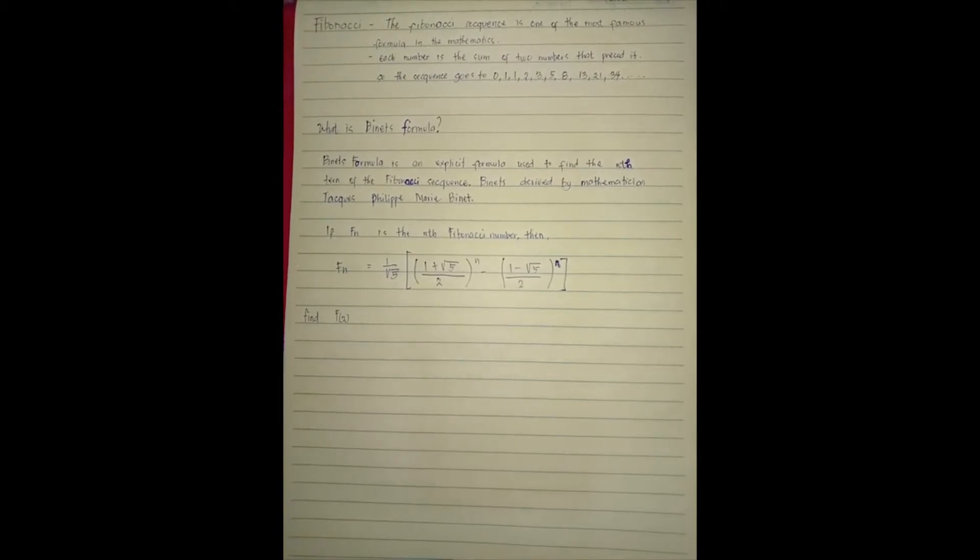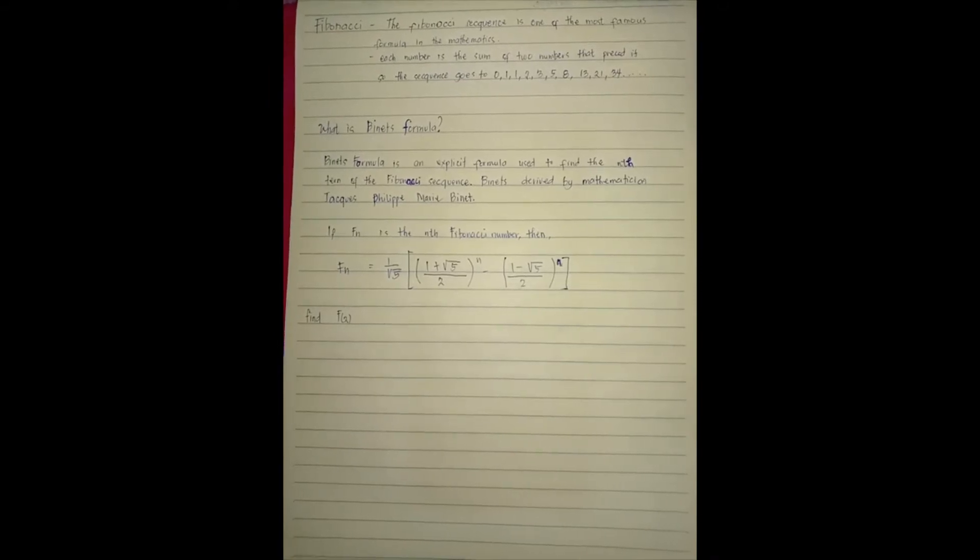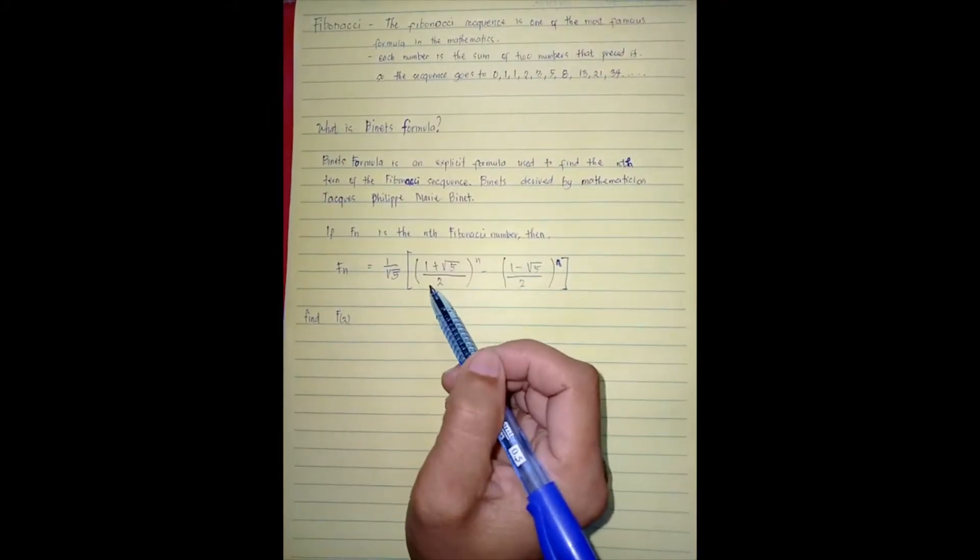So if Fn is the nth Fibonacci number, then Fn is equals to one over square root of five tapos kung nakikita nyo dito sa ating formula.